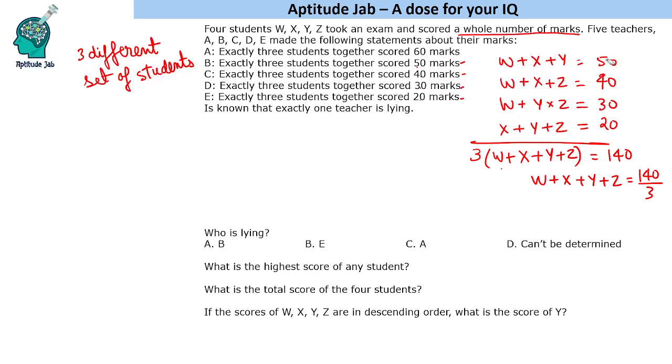Now if we assume B is lying, we will ignore this and add 60 instead of 50. Now this will become 150, so the total of these four will become 50.